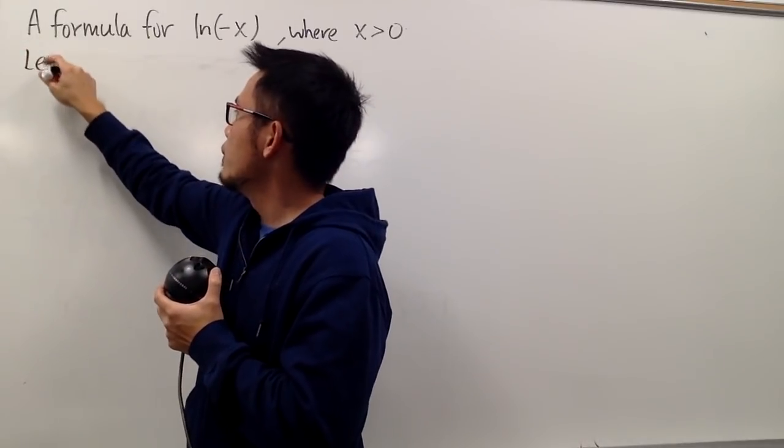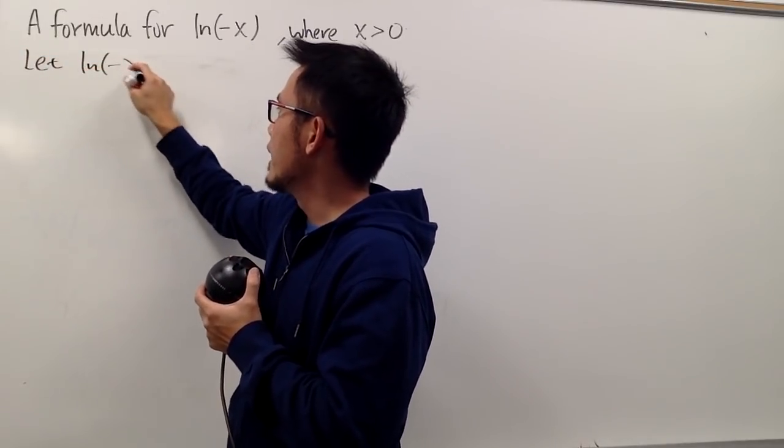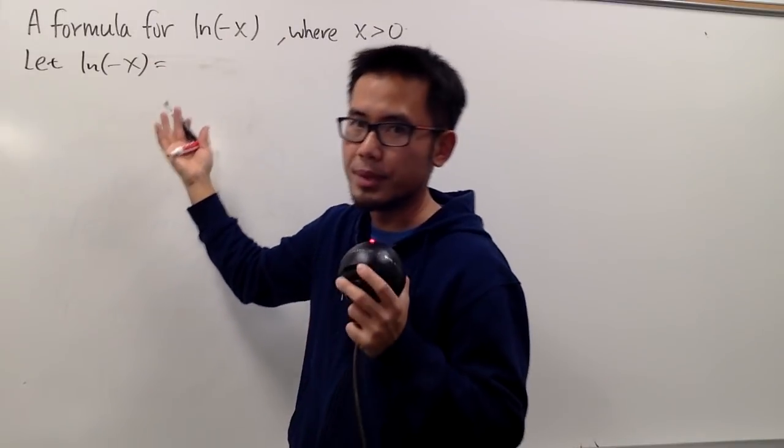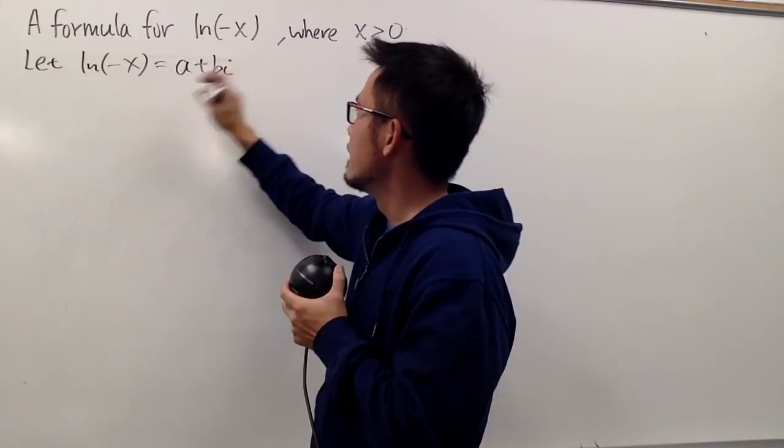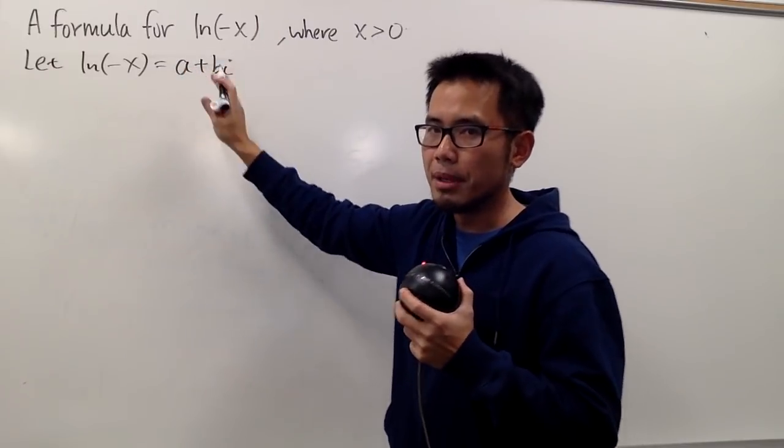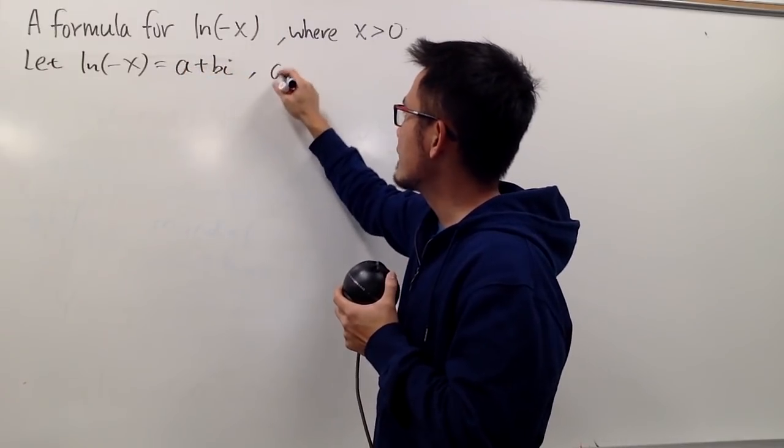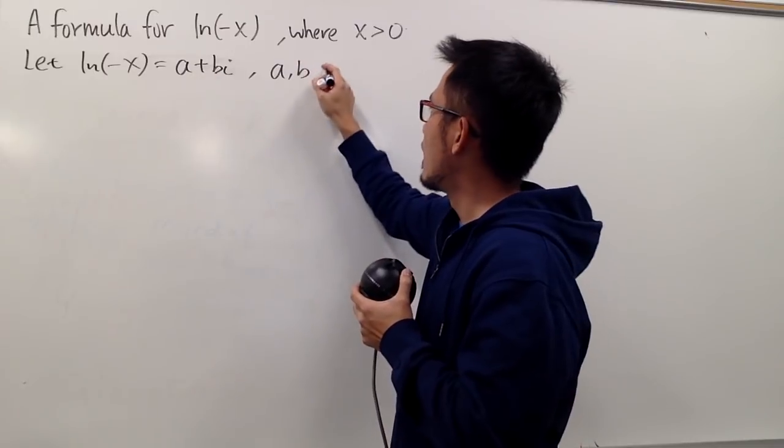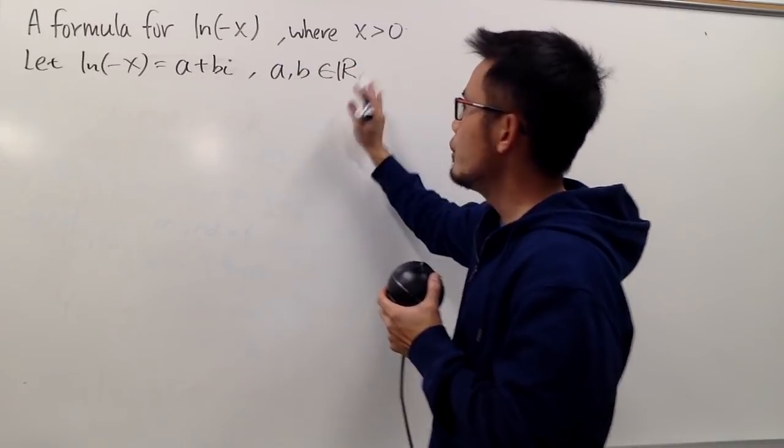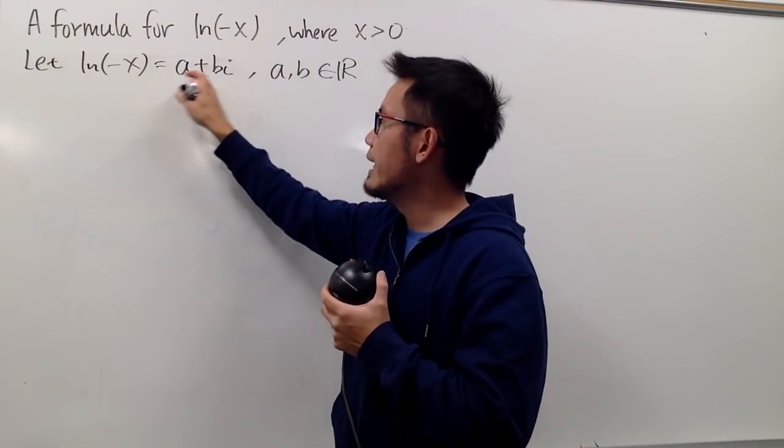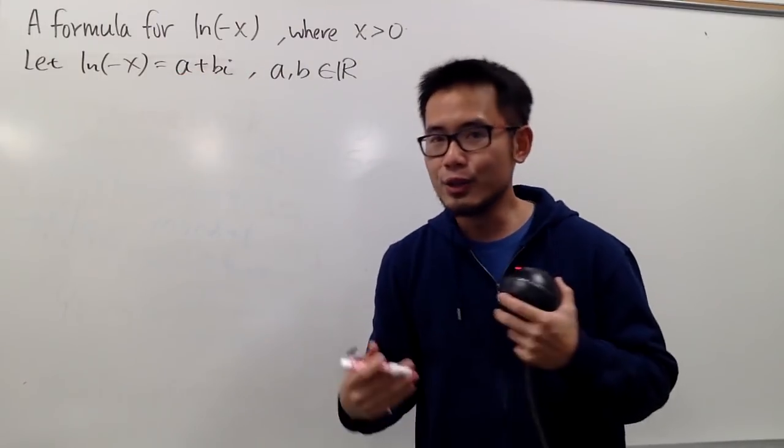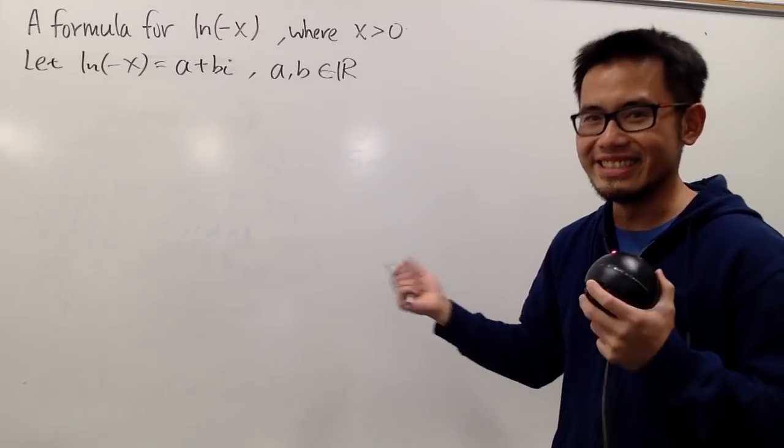So first of all, of course, we will just say that ln of negative x to be a complex number to begin with. So we'll just call this to be a plus bi, namely the standard form of a complex number. And we also know that a and b are just some real numbers, so this is the notation for that. And our goal is to figure out what a and b are, so that we can have a formula nicely.